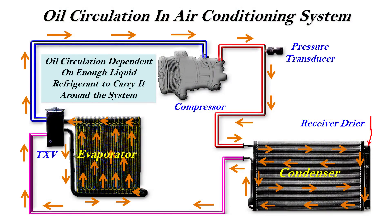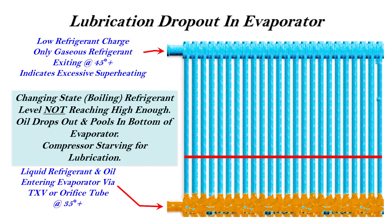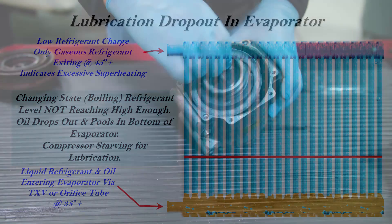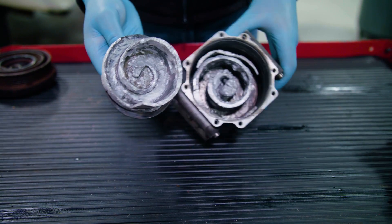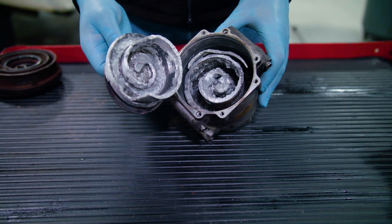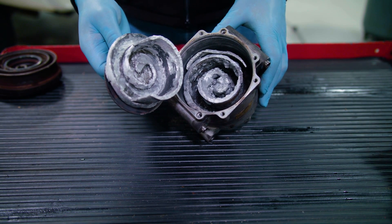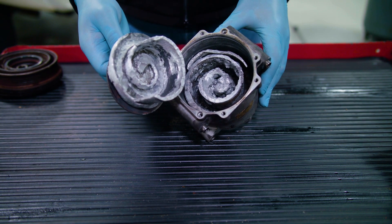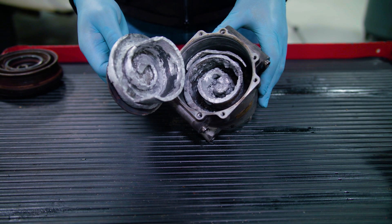Yet small leaks that result in a low charge over weeks or months can mean death for the compressor. Let's understand how this can happen. If the system develops an undercharge due to a leak, the oil, which does not evaporate, separates from the gaseous refrigerant and drops to the bottom of the evaporator. Now only pure refrigerant, which by itself is a powerful degreaser, returns to the compressor. This washes down the vital lubricating film of oil from the compressor moving parts. With no lubrication, the compressor starts to wear and fails rapidly. And so you can see how an undetected leak is often the root cause of a repeat compressor failure months after the original repair.